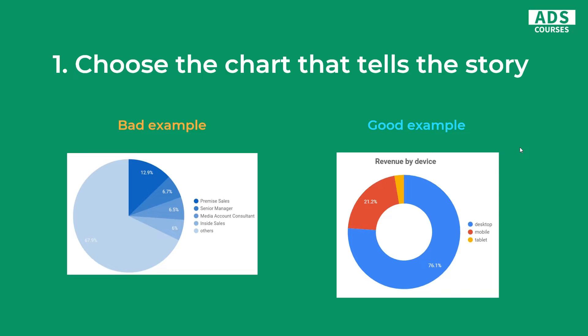On the right, we have a better example of using the pie chart. We have only three dimension values: desktop, mobile, and tablet. We also have a simple title, 'Revenue by Device.' So we know what this chart type is about, and we can easily tell that 76% of revenue is generated by desktop.